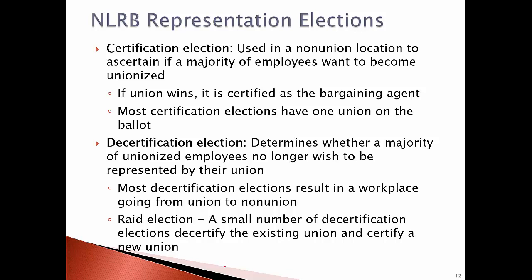It's important to know that unions can both be certified in or decertified out. A certification election is used in a non-union location to determine if a majority of employees want to become unionized; if the union wins, it is certified as the bargaining agent. A decertification election takes place where unionized employees no longer wish to be represented by a union. Most decertification elections result in a workplace going from union to non-union, though sometimes workers will vote out an existing union and certify a new one in its place.